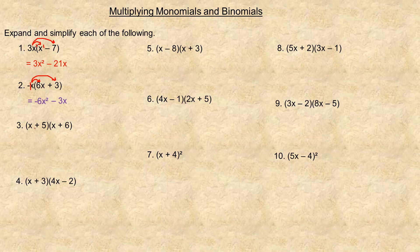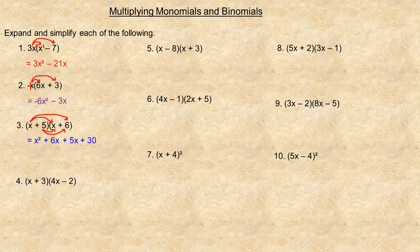For number 3, it doesn't really matter what order you multiply, but doing it in an organized fashion means you won't miss products or double any. Basically, you multiply every term in the first binomial by every term in the second. Starting with x times x gives x squared, then x times 6 is 6x. Then 5 times x is 5x, and 5 times 6 is 30. With two terms times two terms, there should be four products.